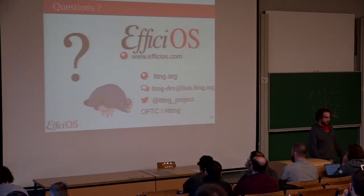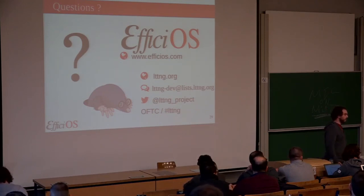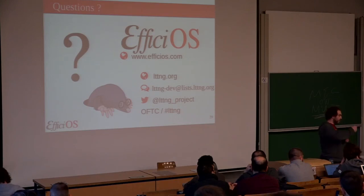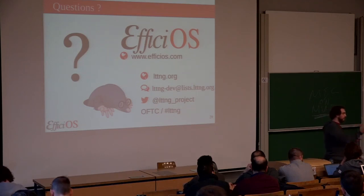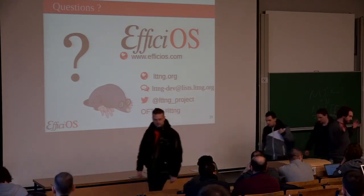Question: You mentioned at the beginning there are agents for Java. As mostly a BCC user, I don't know much about LTTng — what kind of things do these agents provide compared to USDT and uprobes? Answer: It's not for USDT or uprobes. They are just agents that run inside the Java or Python runtime. They are built in Java but start within the runtime and are able to log to the LTTng user-space tracer. Instead of USDT or uprobes — where you have to switch to the kernel every time — it's fully in user space.